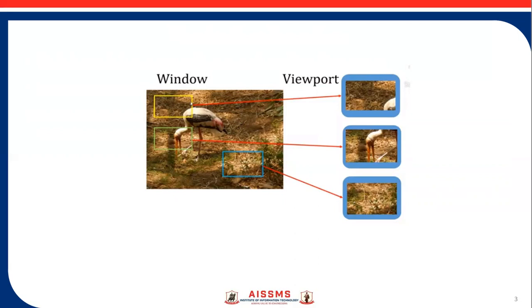The visible region of the scene inside the clipping window is displayed on some device. More formally, the world coordinate area selected for display is called the window. The process of mapping the part of the world coordinate system to device coordinates is referred to as viewing transformation, or window-to-viewport transformation, or windowing transformation. The part of the window captured is displayed on the viewport.